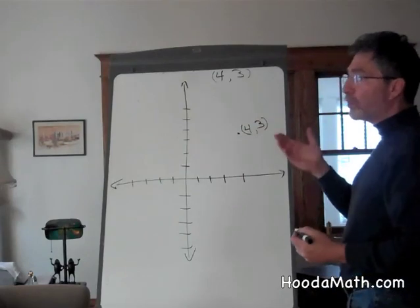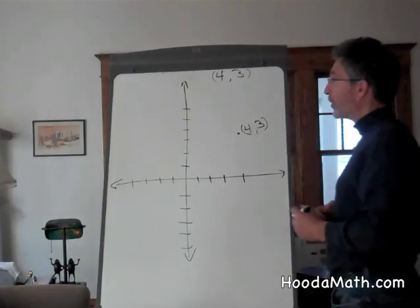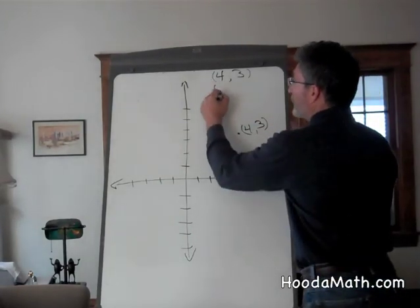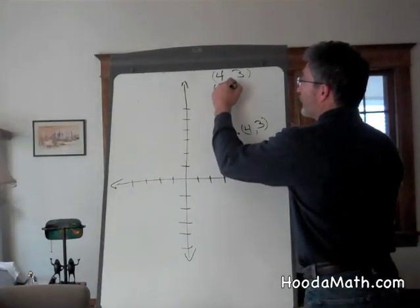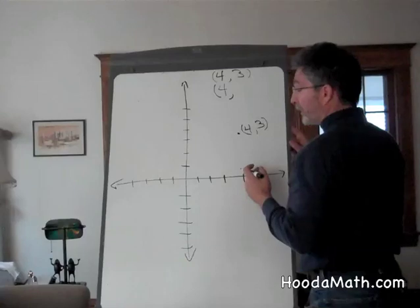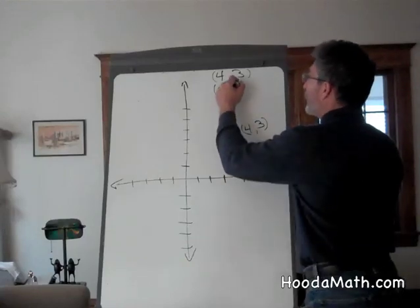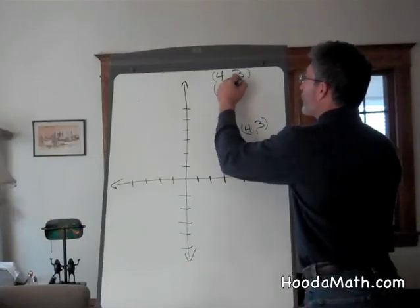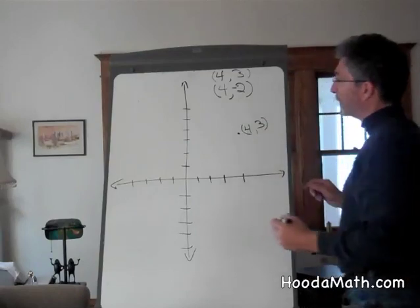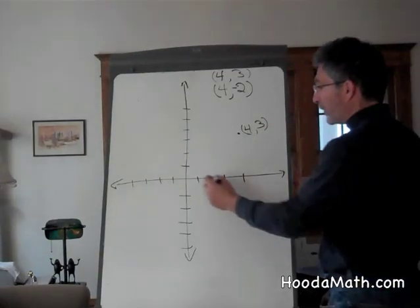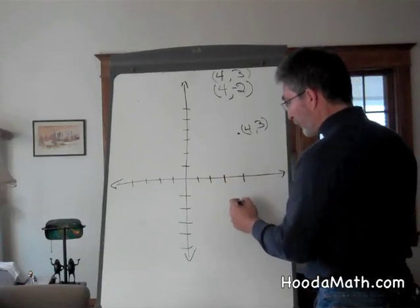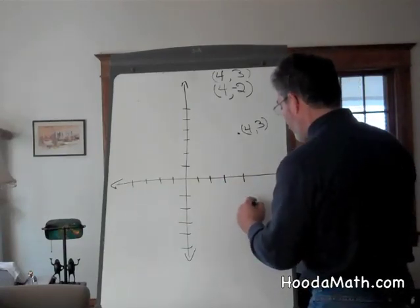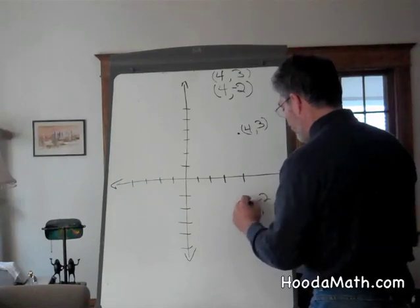We changed only one of the coordinates and left one the same. Say we had four, comma, which would be four to the east still. But instead of going north, we're going south. Then we would have one, two, three, four. One, two. And we would have this point, four, comma, negative two.